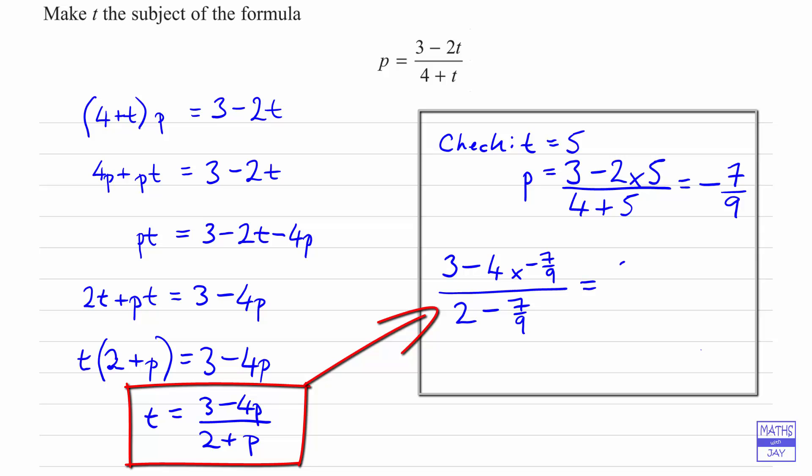So then we could get 3 nines are 27, and then here we've got minus 4 times minus 7, so that's plus 4 times 7, so that's plus 28, and 9 twos are 18 minus 7.